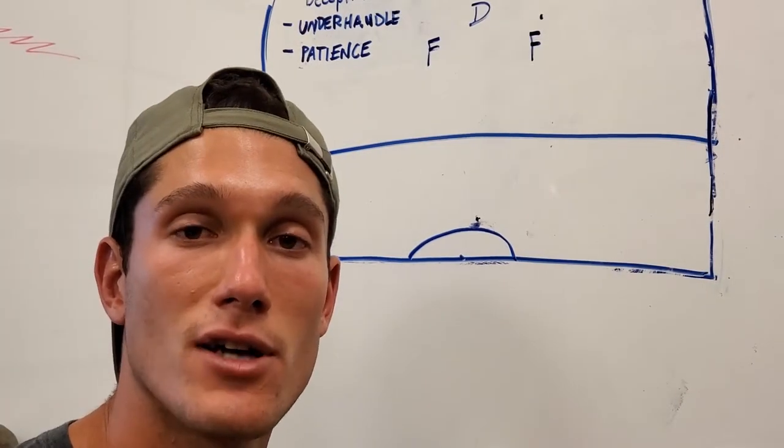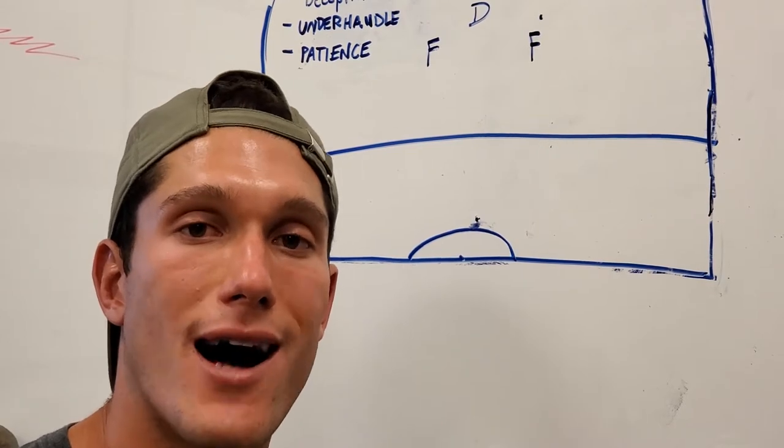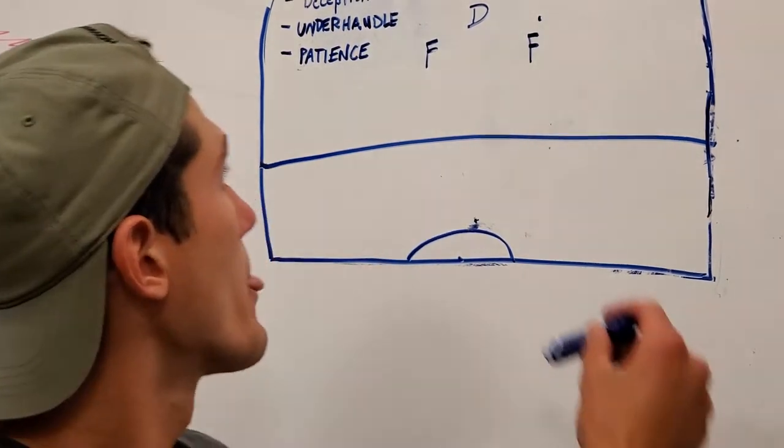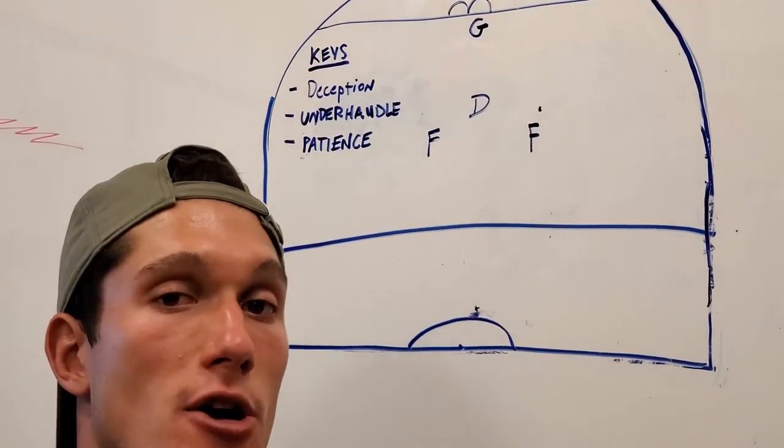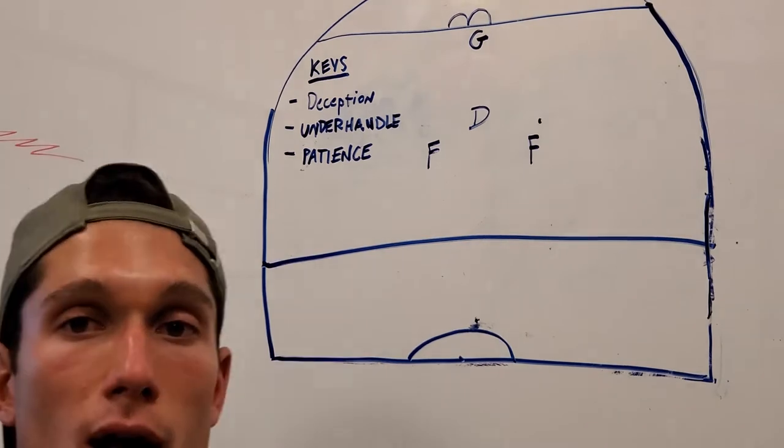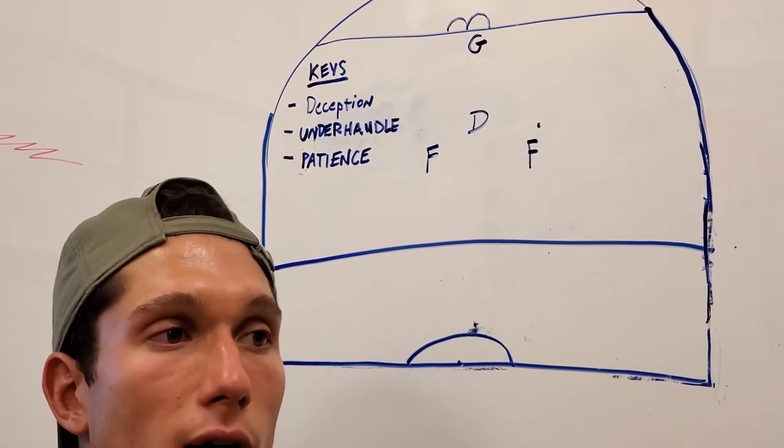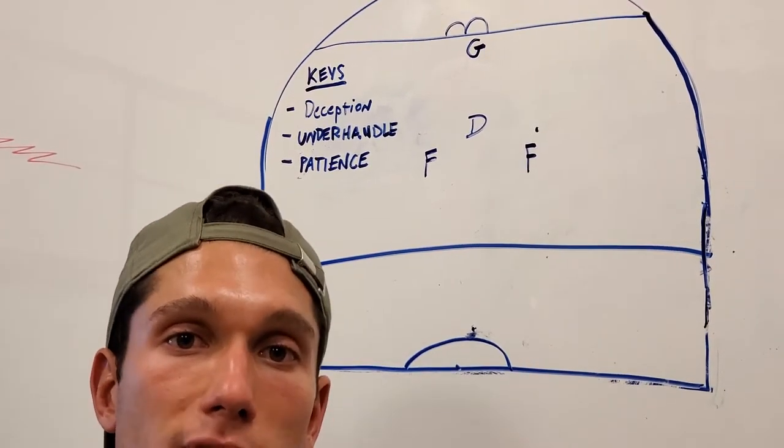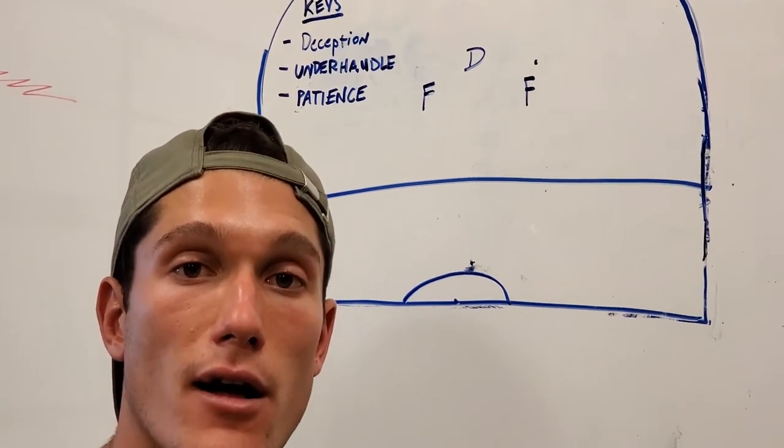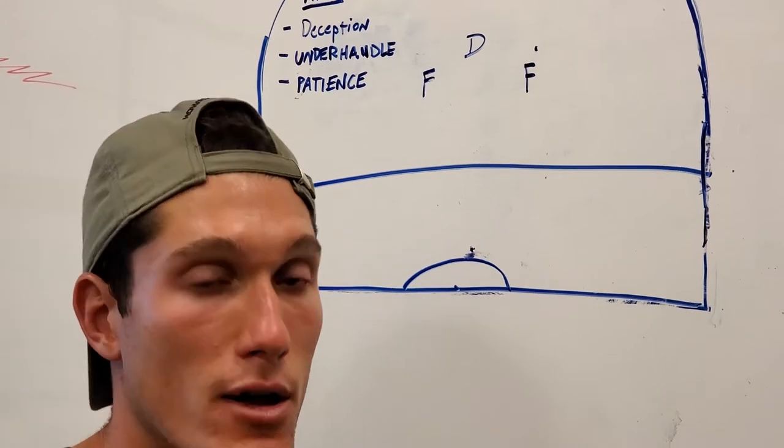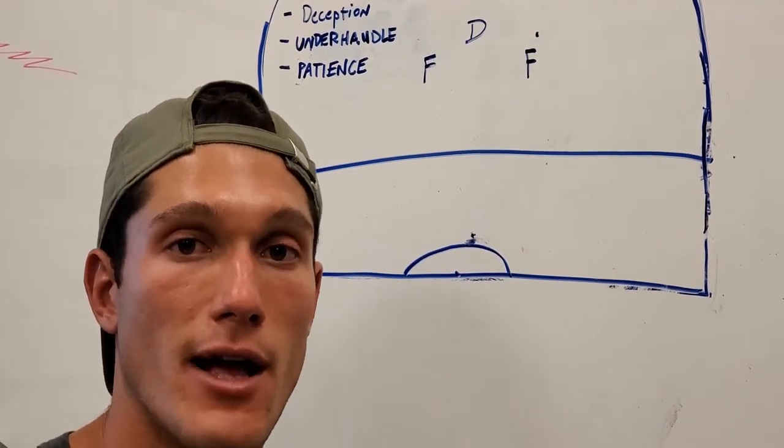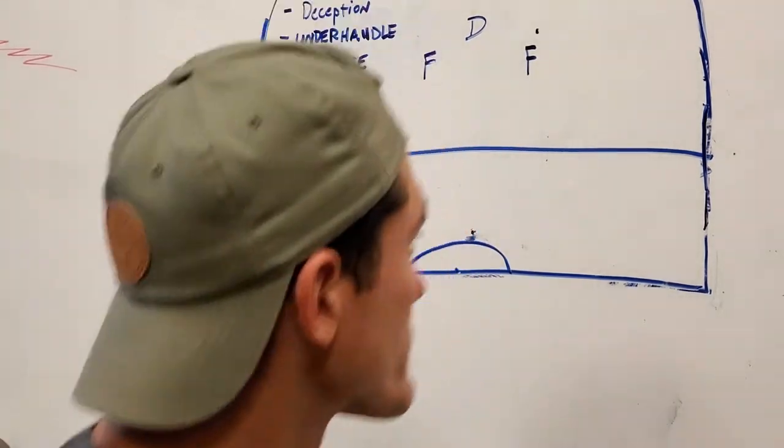Hey guys, today I'm going to discuss two-on-ones from an offensive perspective. A couple keys before we get started are deception, under handling the puck, and having patience. Two-on-ones happen a couple times a game, and if you're fortunate enough to get in an area to give yourself a two-on-one, it's prime time to take advantage and put the puck in the net.